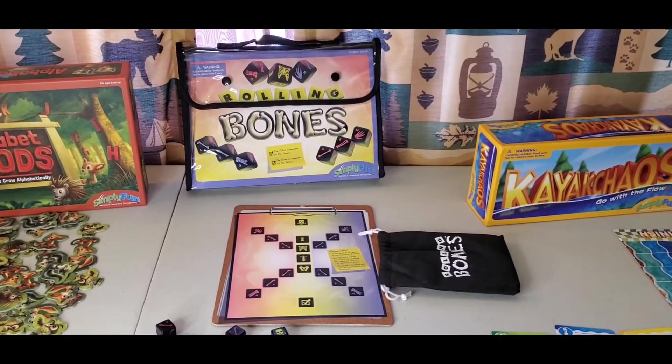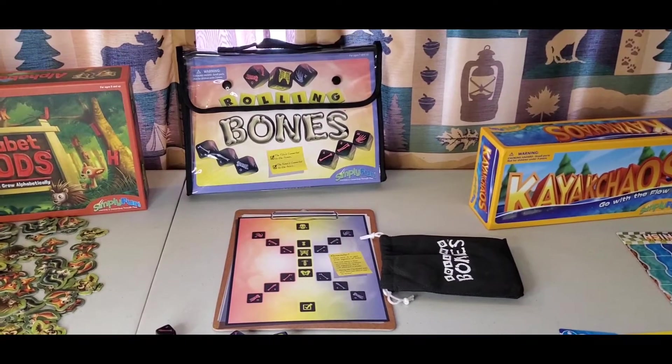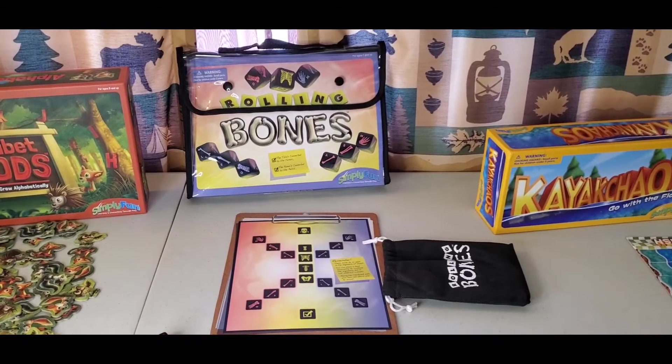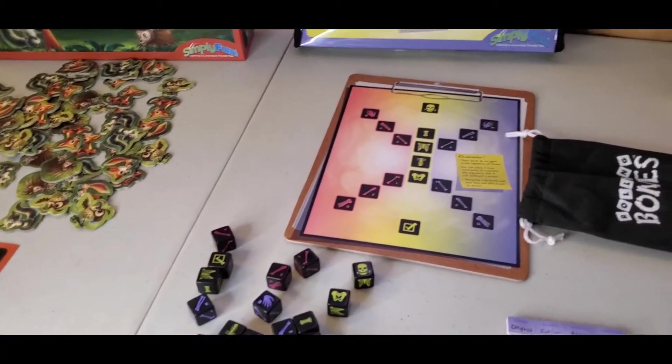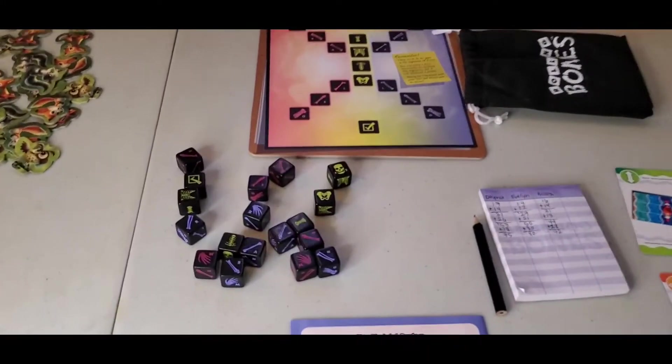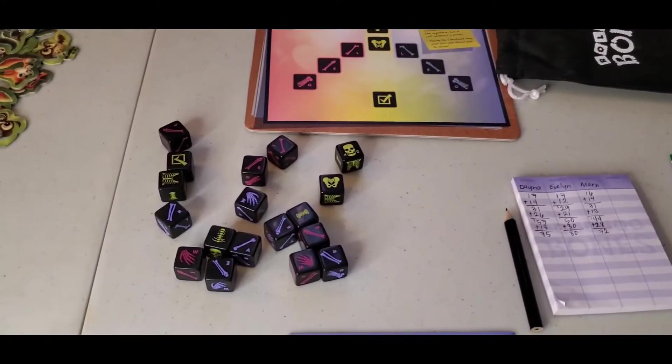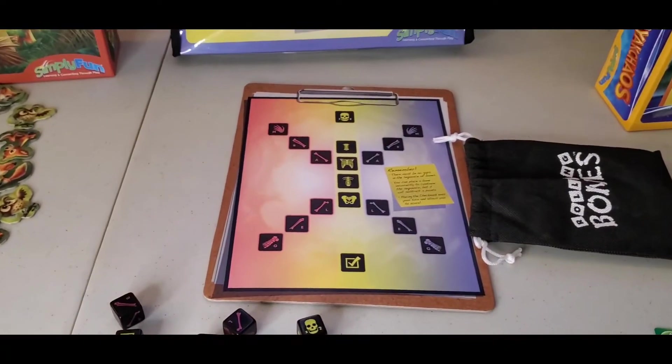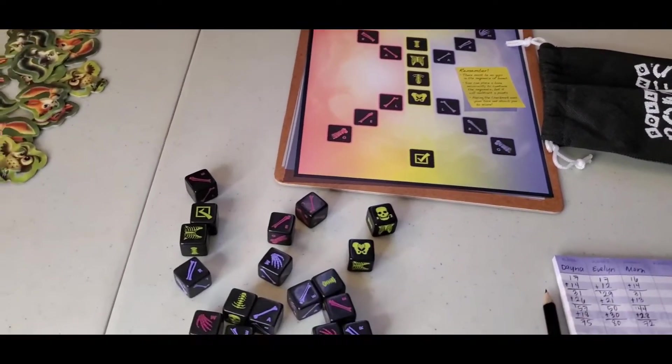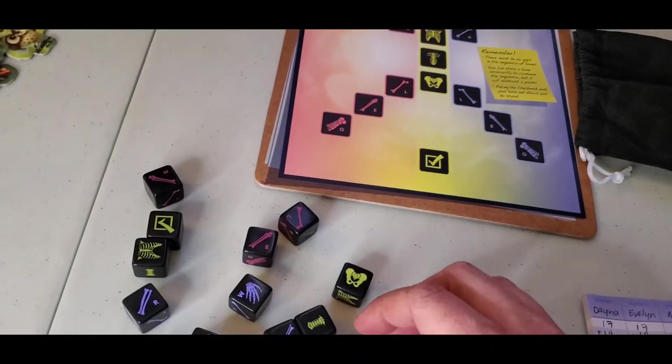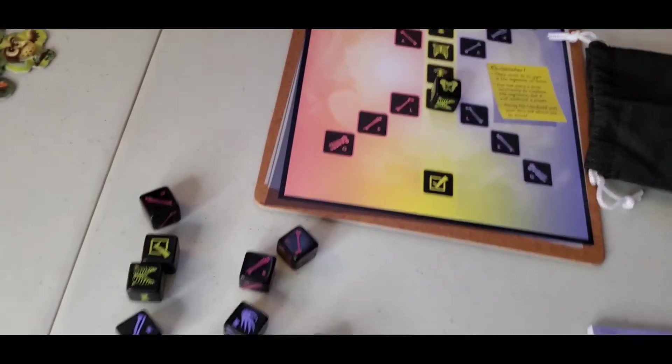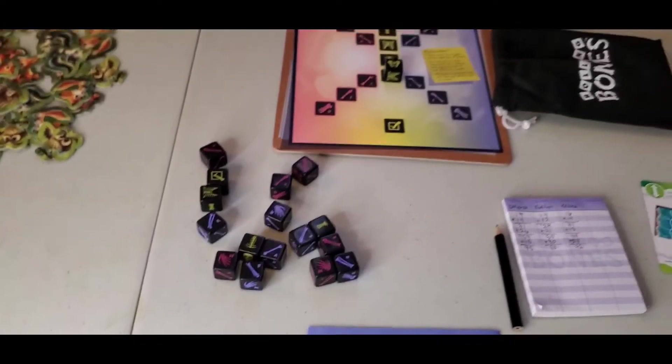Rolling Bones is for ages seven and above, two to four players, and practices anatomy and probability. In this game, you're going to roll all 18 of your dice and place as many of the bones in the skeleton as you can. So like here, I could place the skull and the pelvis, and you're just going to put as many bones on as you can.